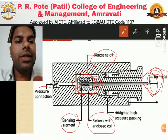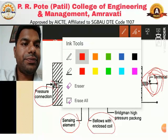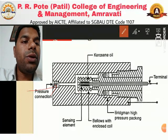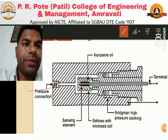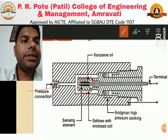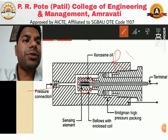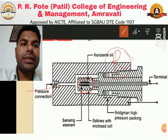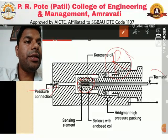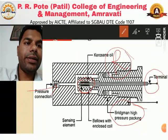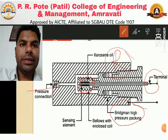The pressure connection is through the pipe. In operation, we supply high pressure through the pressure connection; the bellows get compressed, and the kerosene oil inside the bellows applies pressure on the strain gauge. The area and length of the strain gauge change, its resistance changes, and we can measure the pressure in terms of resistance. The other terminal senses atmospheric pressure, and Bridgman high pressure packing is provided to support the sensing element.